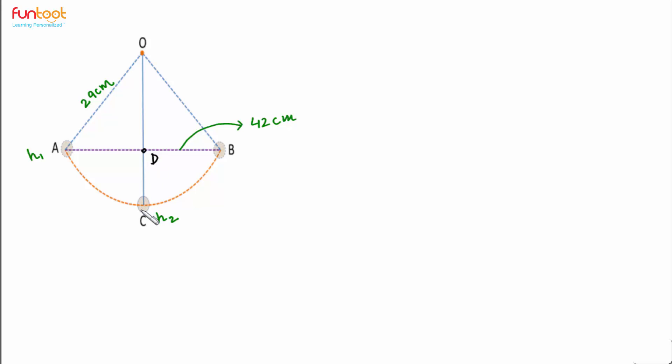Now for finding OD, we know perpendicular from the center bisects the chord, and AB here is like a chord of a circle, and O can be supposed to be the center of the circle. Then OD is the perpendicular from the center, so if AB is 42 centimeters, AD will be half of 42 centimeters, that is 21 centimeters.